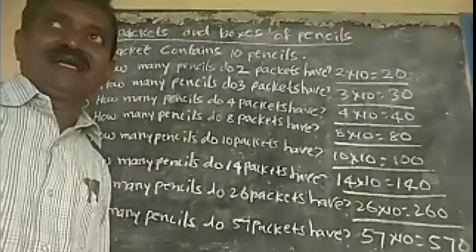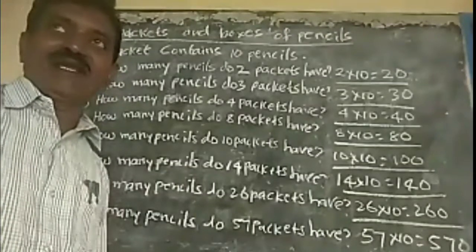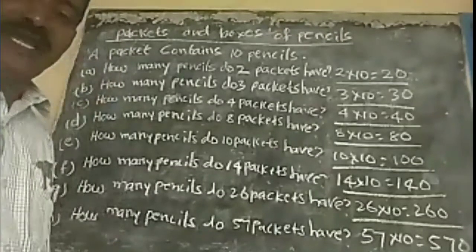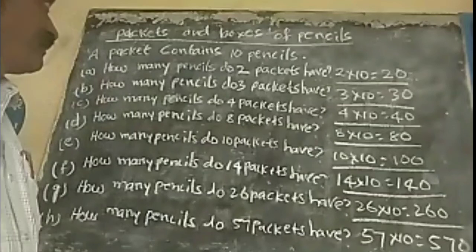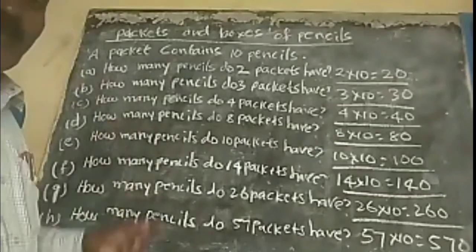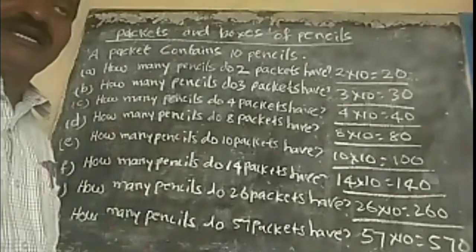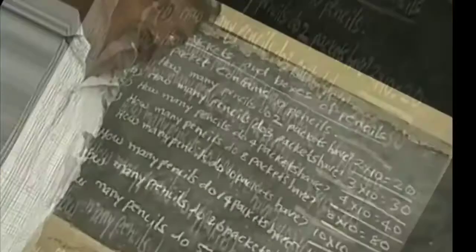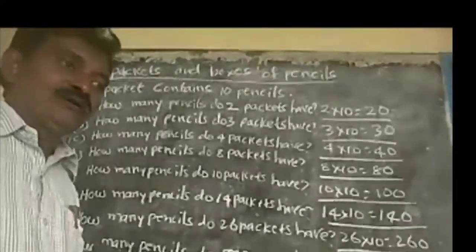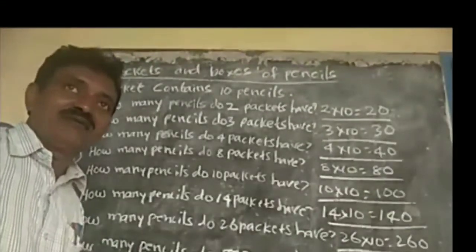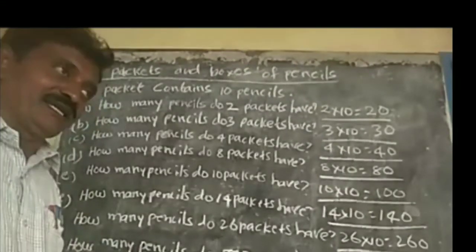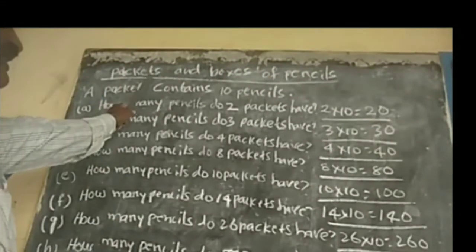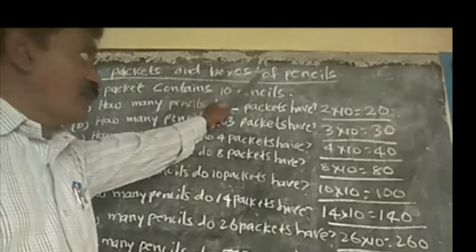Today we are doing mass multiplication. Multiplication by 10 is very easy. See this — packets into boxes of pencils.